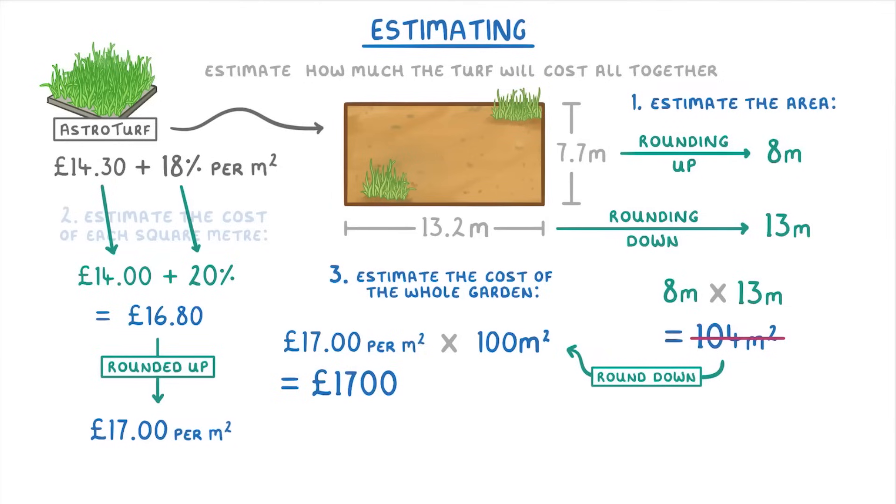So this answer is only an estimate, but it helps to give us an idea of how much the project might cost. And actually, if we hadn't rounded any of these values, the answer would have been £1715. So we were pretty close. And one of the reasons our estimate was so close is because we rounded up and down pretty evenly, which means that a lot of our errors cancelled each other out.